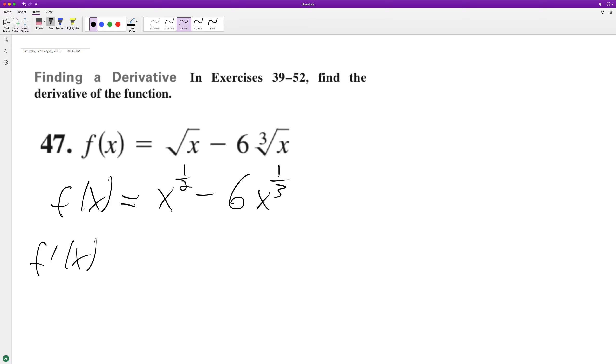So we get f'(x) equals 1/2 x raised to the, subtract 1 from the exponent now, negative 1/2, minus 6 times 1/3. And then we get x raised to the, subtract 1 from this, negative 2/3.